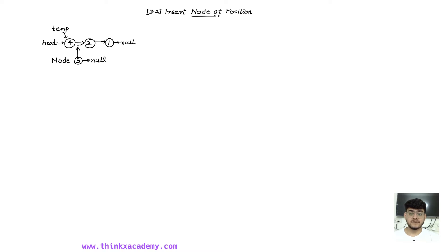So if I want to insert three here, this temporary node should be pointing at four. And if I want to insert three in between two and one, then this temporary pointer should point at two. The reason is that we are only able to access the next node using the next pointer — we will not have a previous pointer. So we need to make sure that we stop our while condition one place before where we have the element.